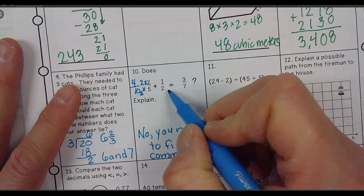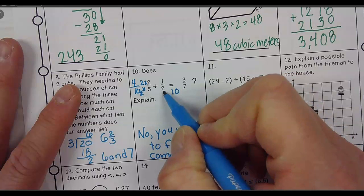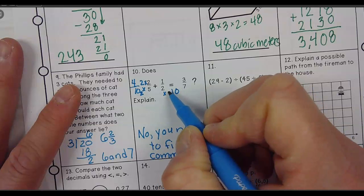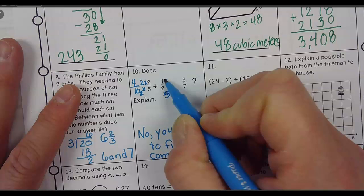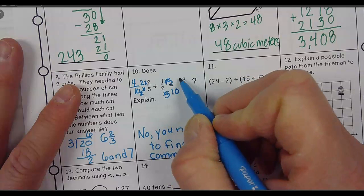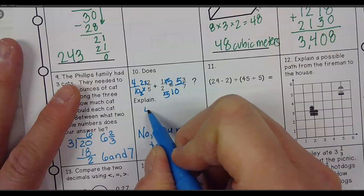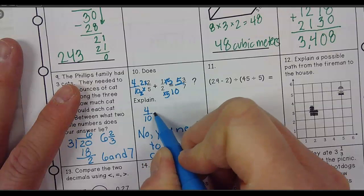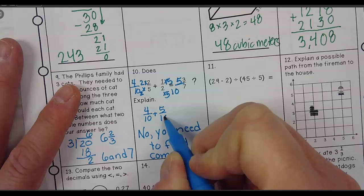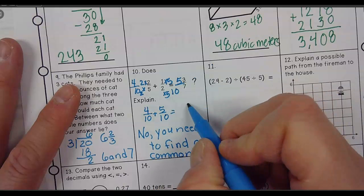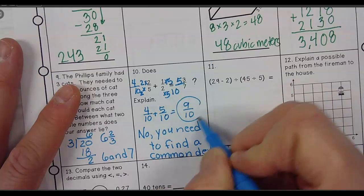And then if I'm moving this to 10, I multiply the bottom by? 5. And the top by? 5. 1 times 5 is? 5. So I have 4 tenths plus 5 tenths equals 9 tenths. All right.